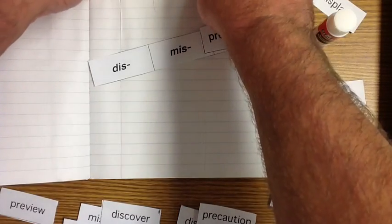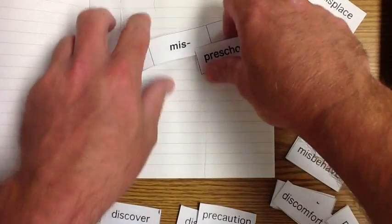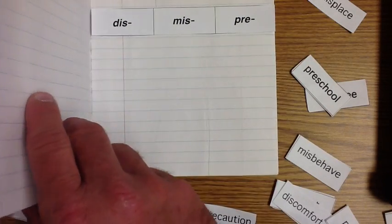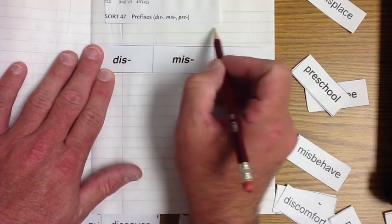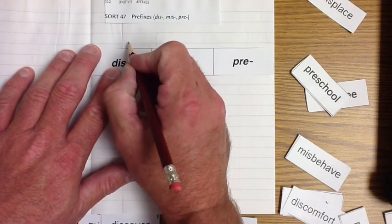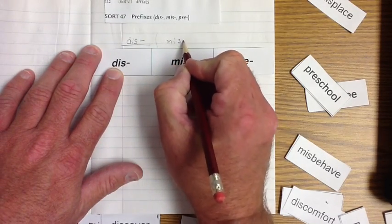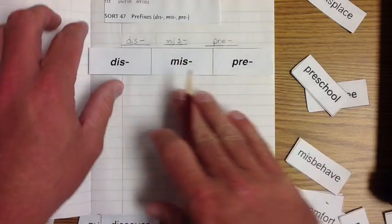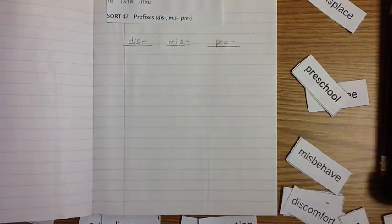I'm going to take this, glue this up on top so we've got it there. I'm not going to glue these on because I want you to use these at other times. I'm going to move these across here and take my pencil. I've got a space up here so I can write some information. I'm going to put dis-underline, mis-underline, pre-underline. That way I know I've got them right in that order.